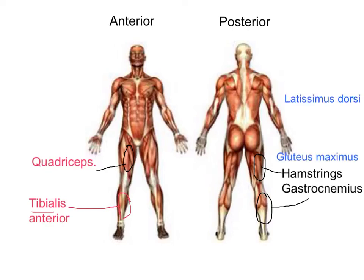Moving up the body, we've got the gluteus maximus, which is this large muscle that you sit on — it cushions your bottom when you sit down. It's the largest muscle in the body. And at the back, in this area here, that is the latissimus dorsi.